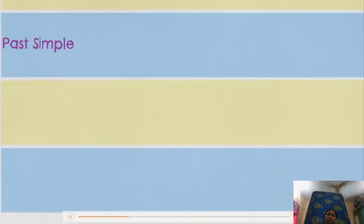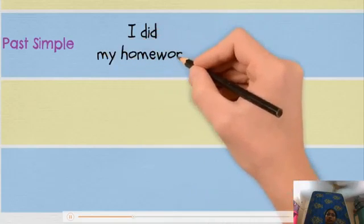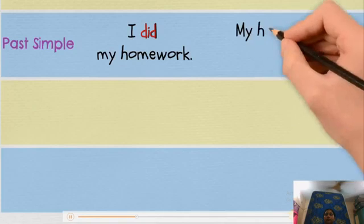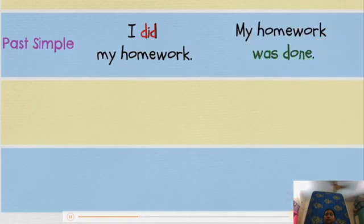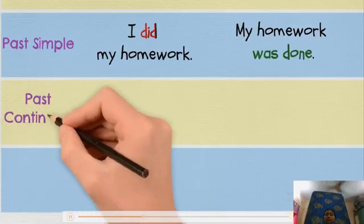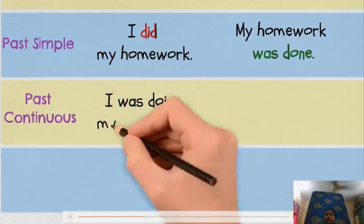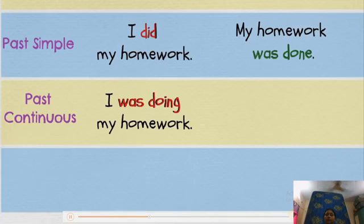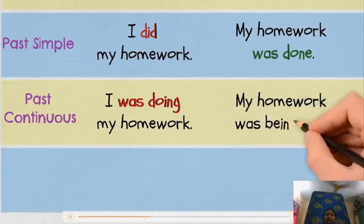Past simple — Active: I did my homework. Passive: My homework was done. Past continuous — Active: I was doing my homework. Passive: My homework was being done.